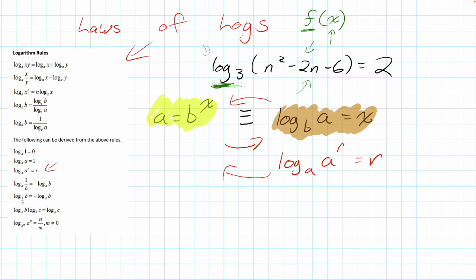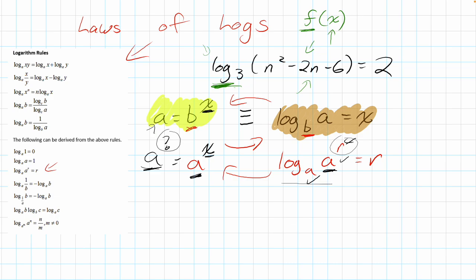Let's look at the rule: log base a of (a to the power R) equals R. I'll try to turn that into an exponent form to make sense of it. The base of the log goes in the base position of the exponent. The argument goes on the other side. So it says a equals a — meaning a to the power x equals a to the power of something, so the unknown must be x. Hence we can drop everything else and just work with the exponent.